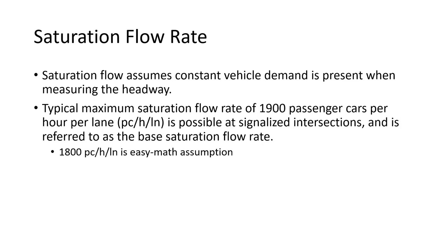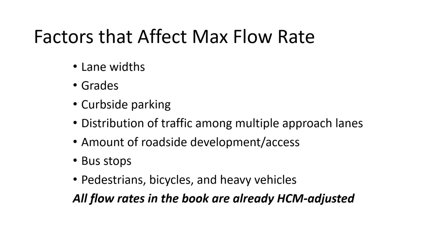At 30 to 40 mph with everyone keeping a nice tight grouping, you can get two seconds or even a little below. The theoretical max saturation flow rate we use is 1,900. Often we just pick 1,800 because it makes the math easier — that's a two-second headway. The 1,900 may be a theoretical maximum, but you're rarely going to see that in the real world.